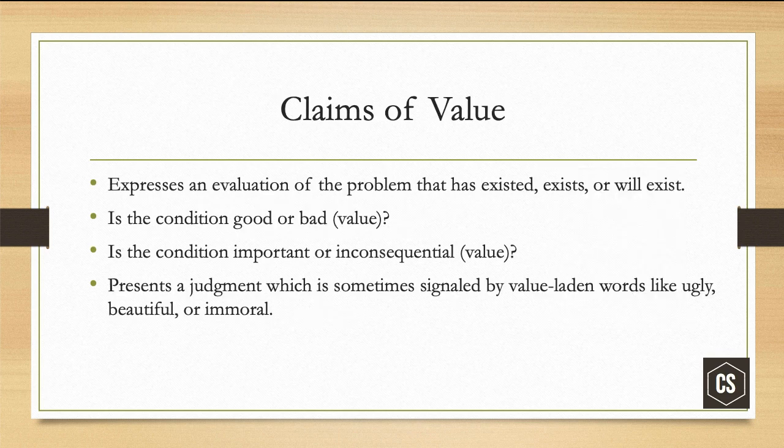A claim of value expresses an evaluation of a problem that has existed, exists, or will exist. The key with a claim of value is that word: evaluation. Is the condition good or bad? If Parker had said 'poverty is bad,' that would be a value judgment. Is the condition important or inconsequential? And then it presents a judgment, which is sometimes signaled by value-laden words like ugly, beautiful, immoral, good, or bad. If you're making a claim of value, you're saying it's good or bad, ugly, beautiful, immoral — whatever value you place on that.